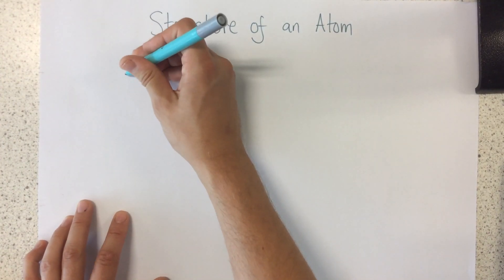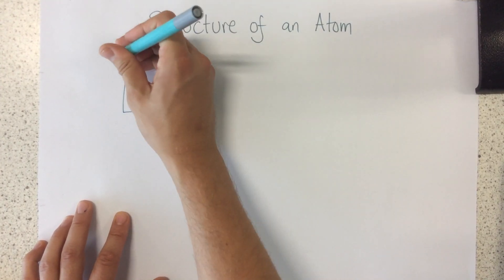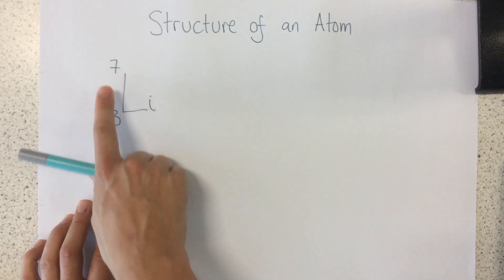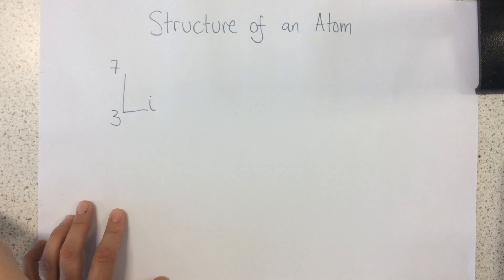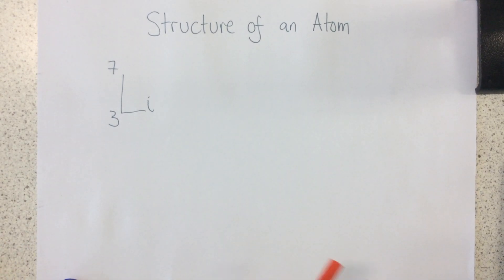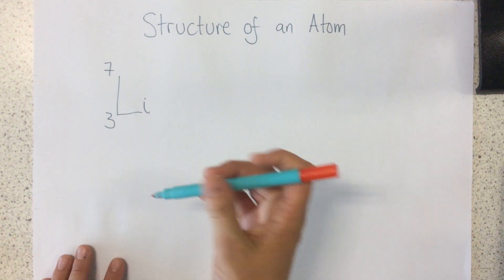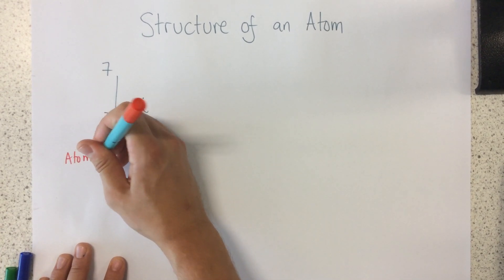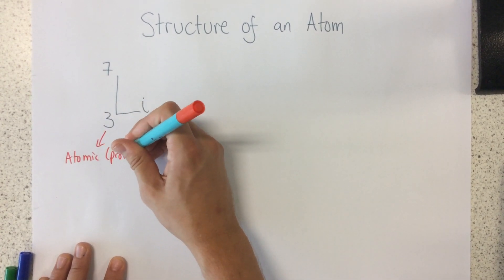So let's have a look at an example. One of the elements within the periodic table is lithium. It has these two numbers, 7 and 3. So first of all, this smaller number here is called the atomic number. It's also sometimes called the proton number as well.